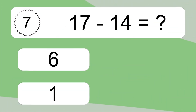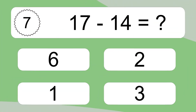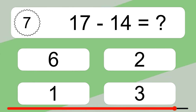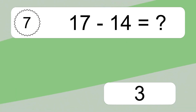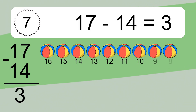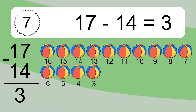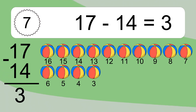17 minus 14 equals what? 17 minus 14 equals 3. Let's count it: 16, 15, 14, 13, 12, 11, 10, 9, 8, 7, 6, 5, 4, 3.